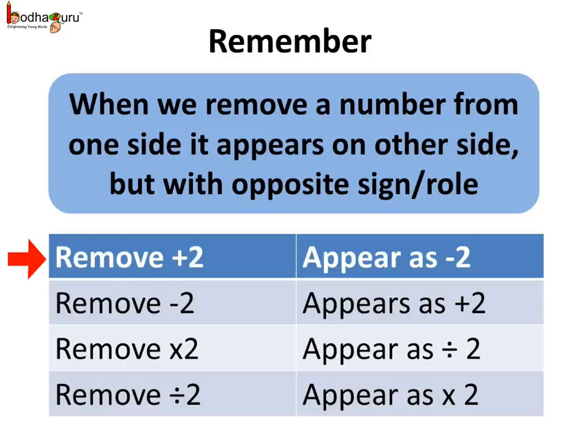For example, when we remove plus 2 from one side, it appears as minus 2 on the other side. And multiplier becomes the divisor and vice versa.